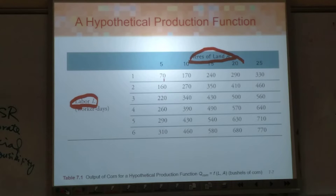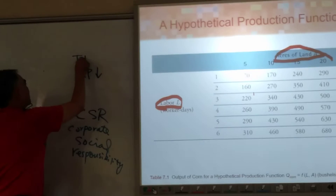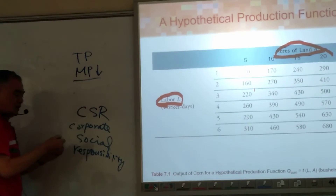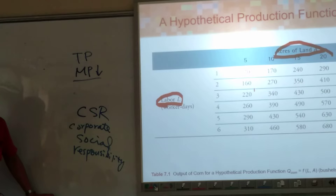When we turn to the next page, you're going to see MP goes down. What is MP? MP is marginal product. TP is total product. MP goes down — we say diminishing returns of marginal product, or diminishing return.